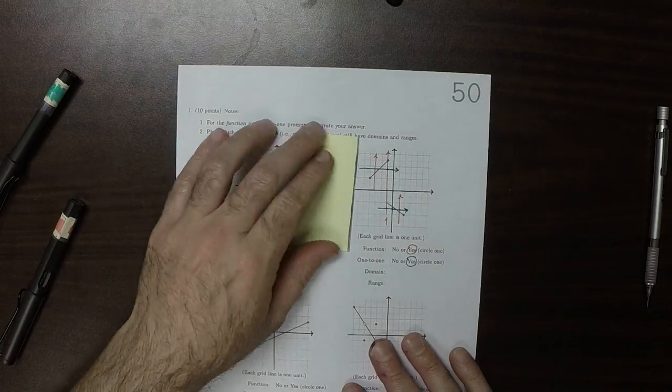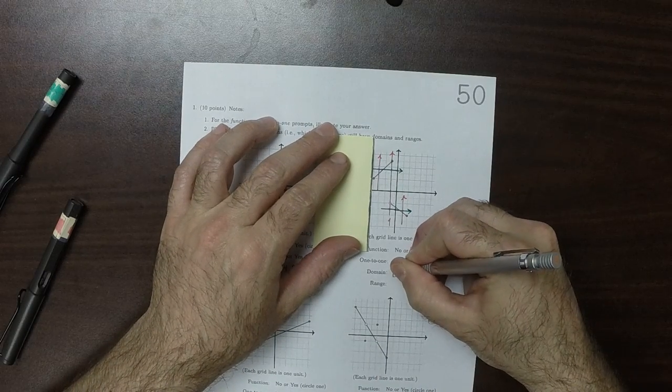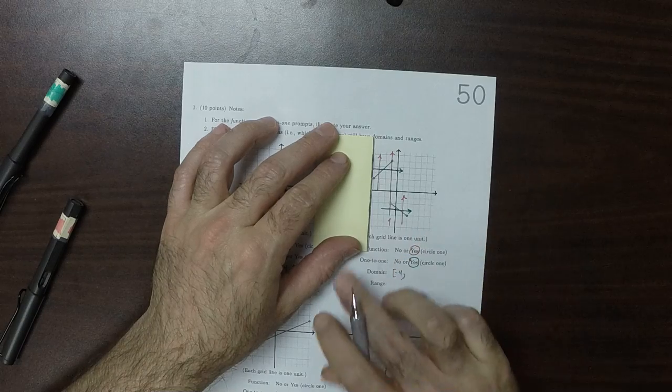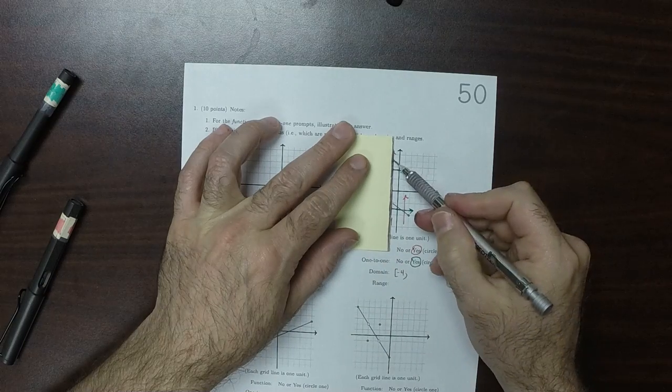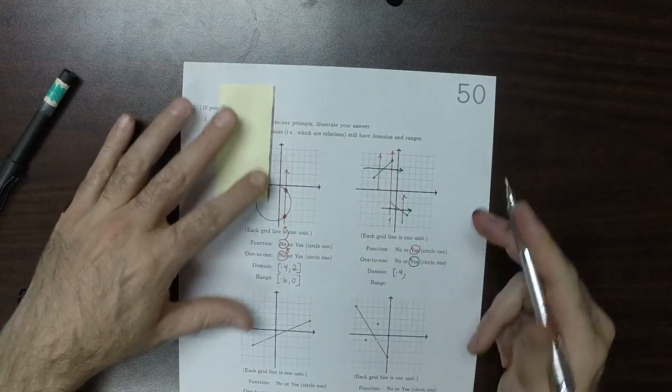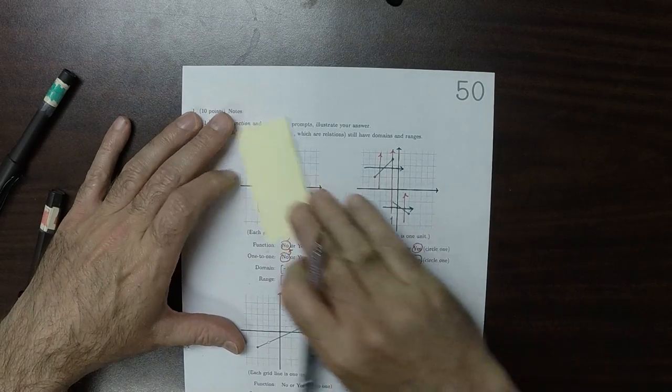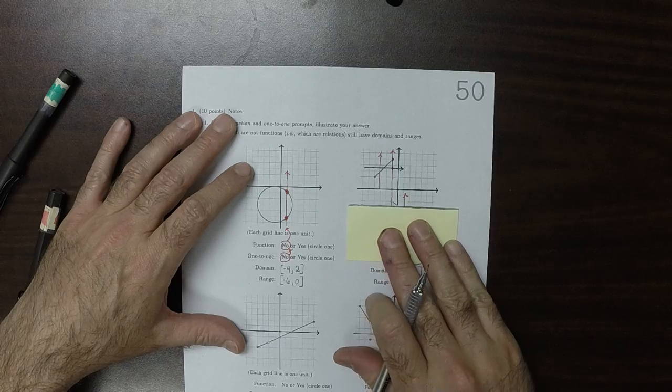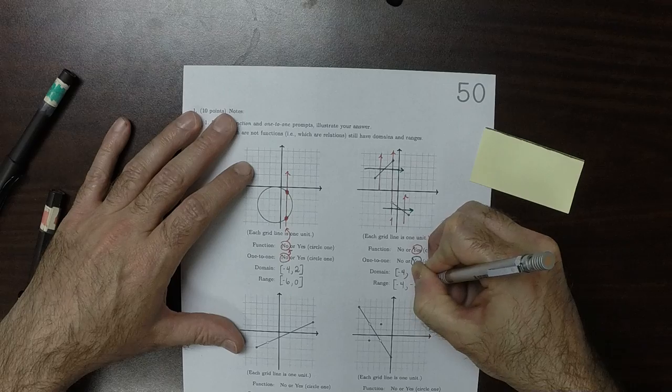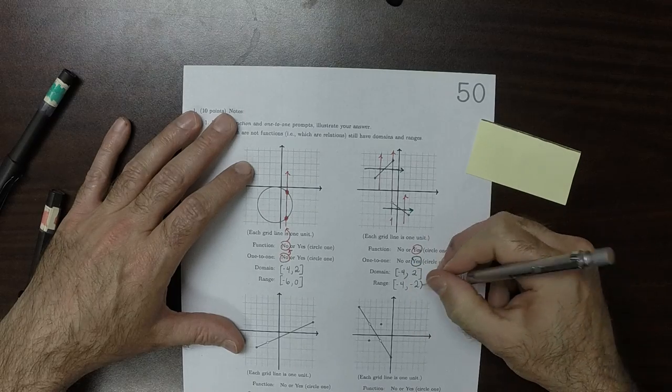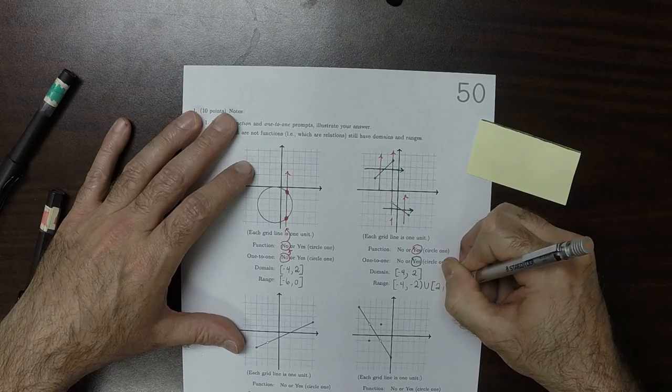The domain is all the way from here, so that's negative four, up to yes, that point is still included because we have it up there, so all the way up to two. And the range, that's from negative four to negative two, open at negative two, and then union two to four.